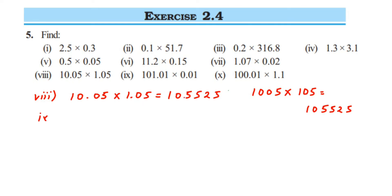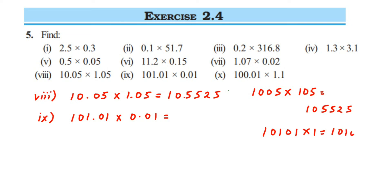The ninth question is 101.01 multiplied by 0.01. Here we are multiplying 10101 by 1, which is just 10101. Placing the decimal: two digits after the decimal in the first number, two digits in the second, so total four digits. Counting four digits from the right — 1, 0, 1, 0 — we place the decimal, giving 1.0101.